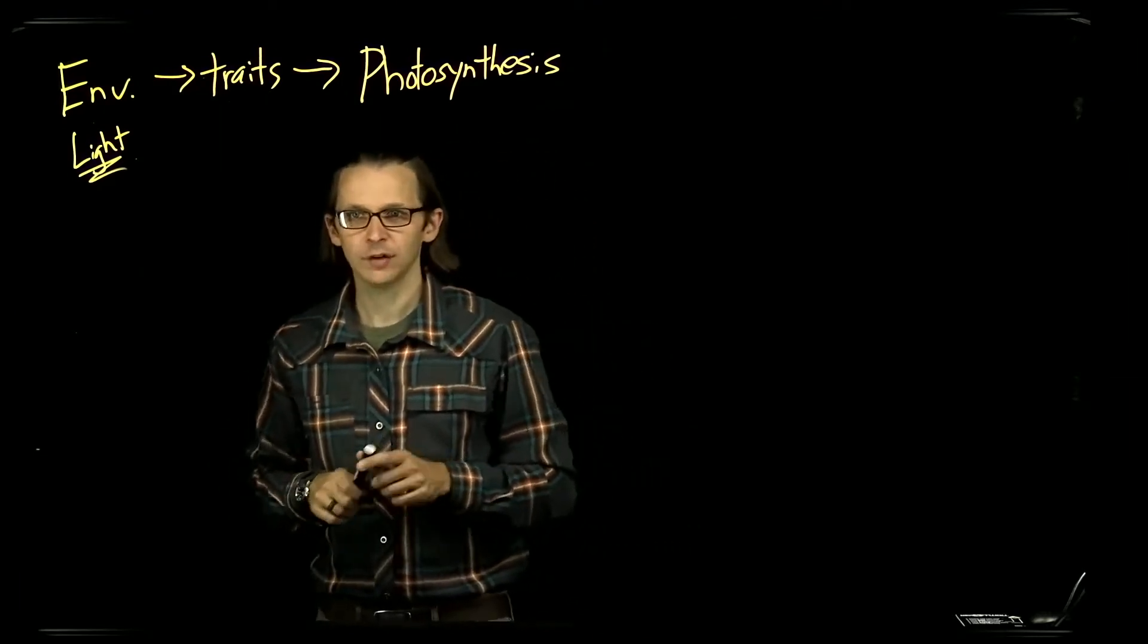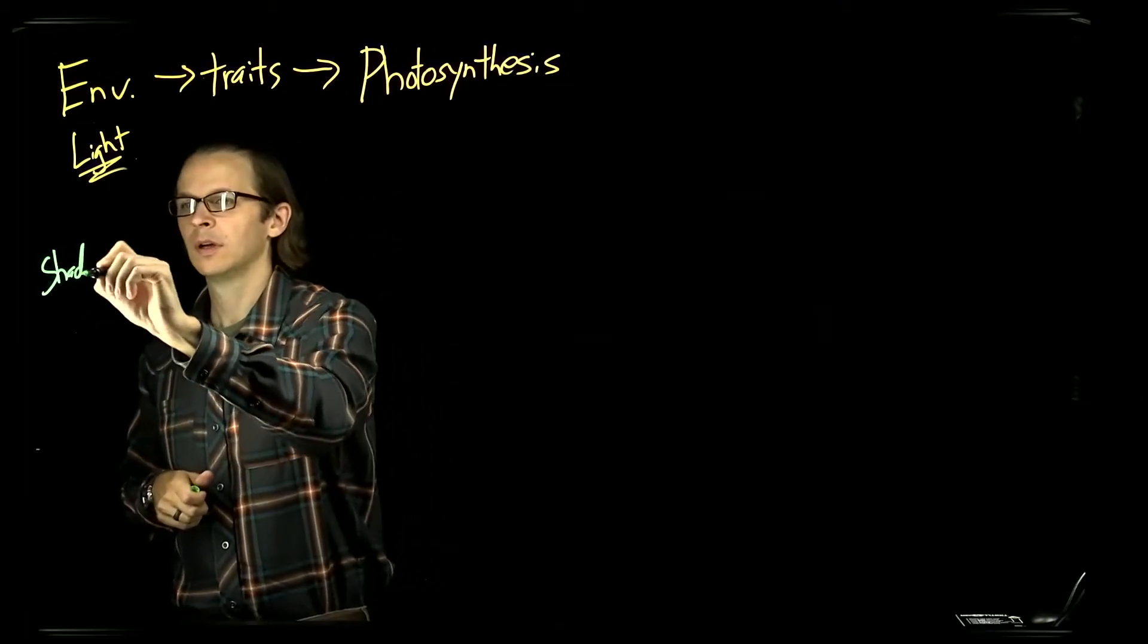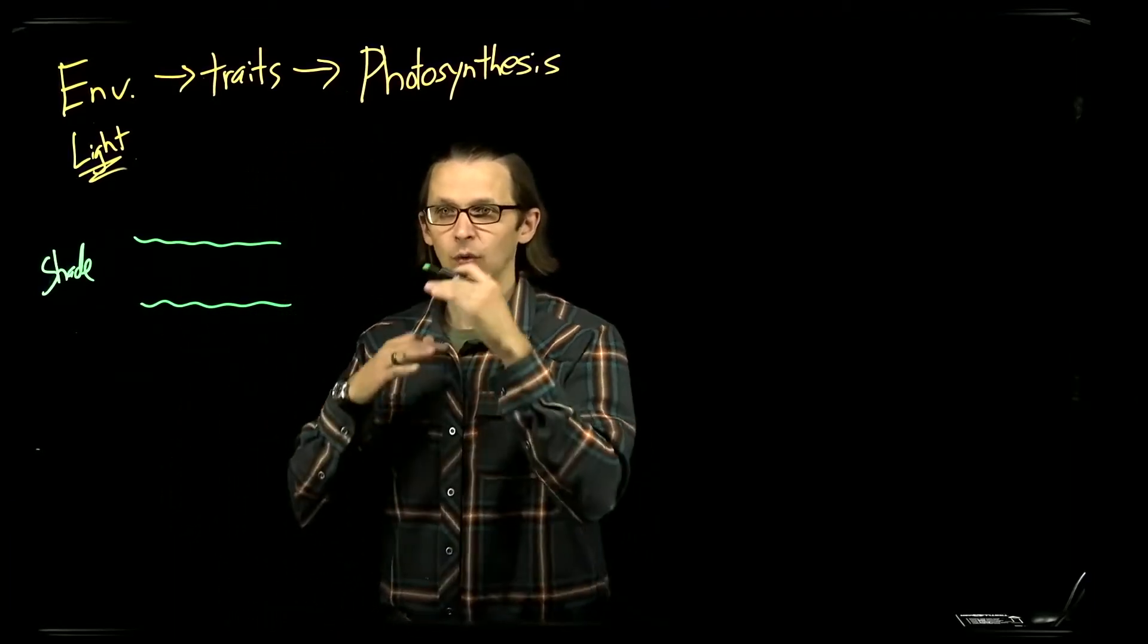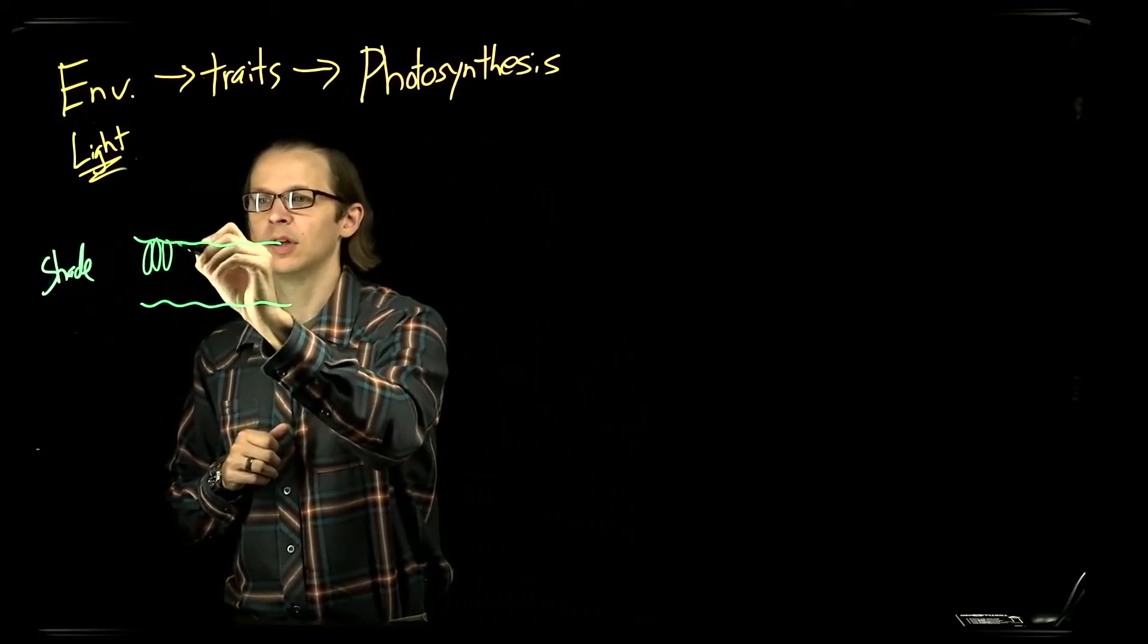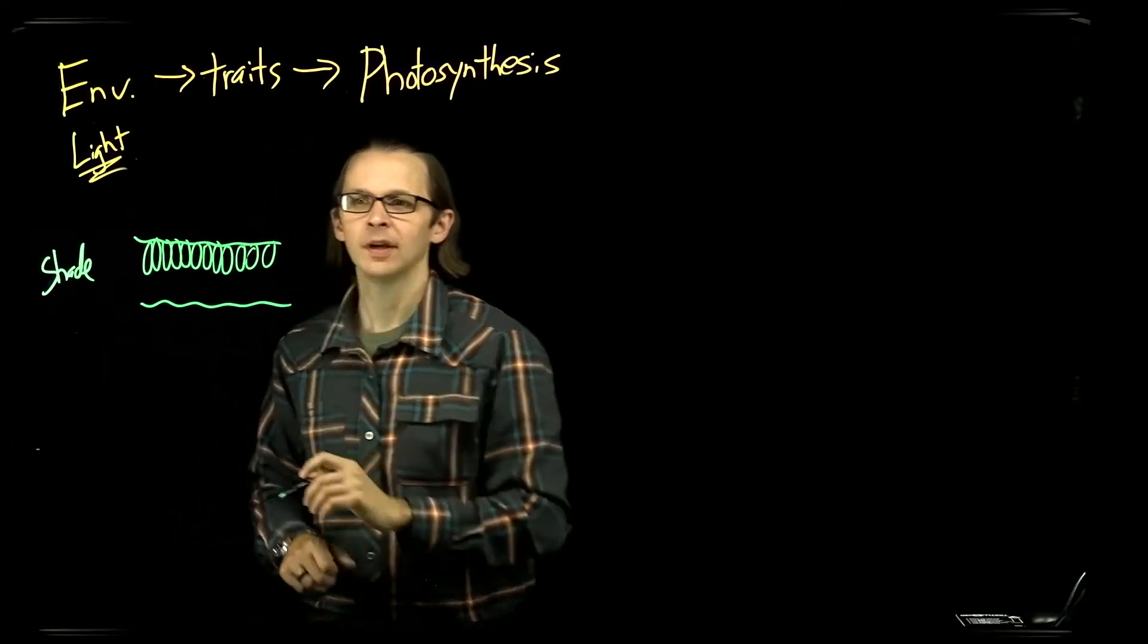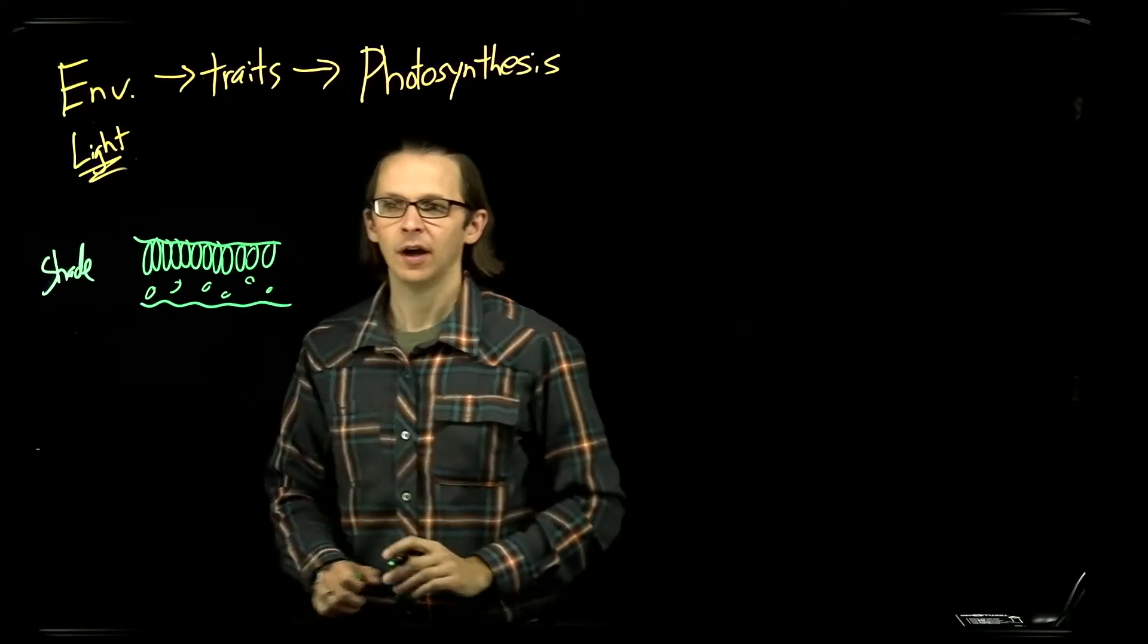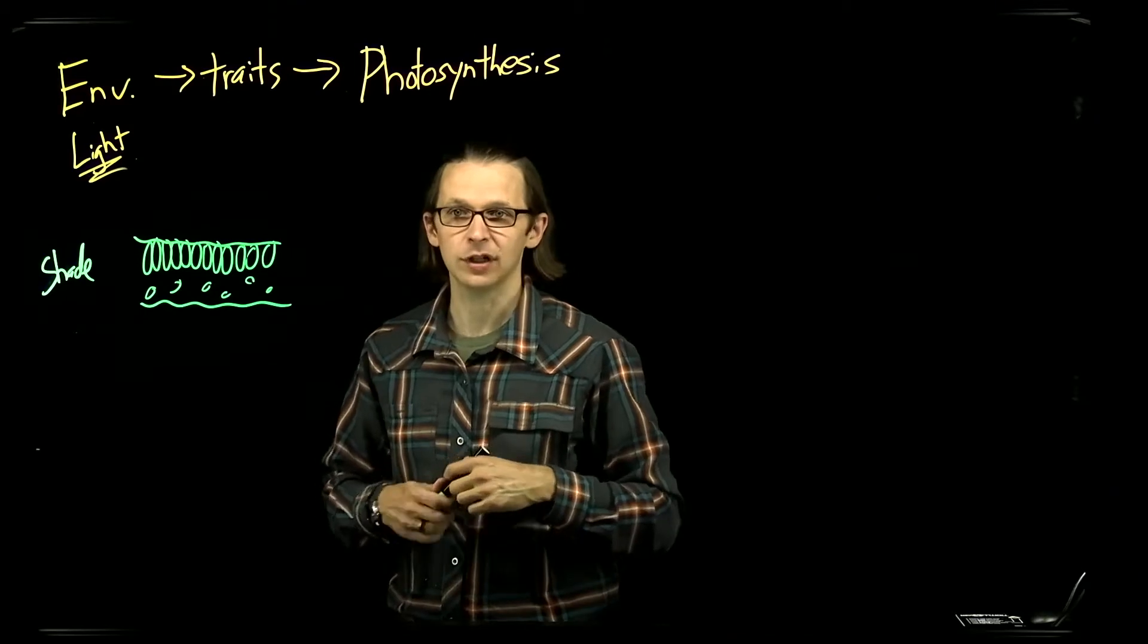So if we think about the cross section of a leaf that exists under low light in the shade, and we think about drawing a cross section of that leaf, that leaf has two layers of waxy cuticle that prevent water loss. Inside that waxy cuticle we have an array of cells called the palisade parenchyma that are full of chloroplasts and photosynthetic machinery, and we have the spongy mesophyll, other cells that exist around it, and a lot of air space that facilitates the exchange of CO2 and water.